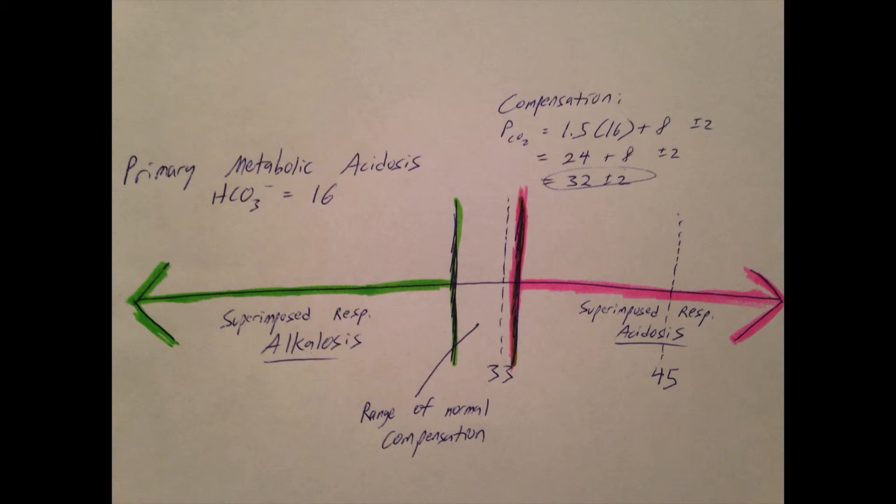Notice that our new normal is below the normal lab value range for PCO2, which is 33 to 45. It's a really important concept. You can almost discard the normal values of PCO2 and HCO3 once you've established that there's an acid-base disorder.